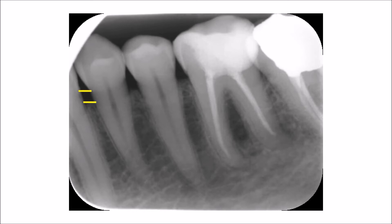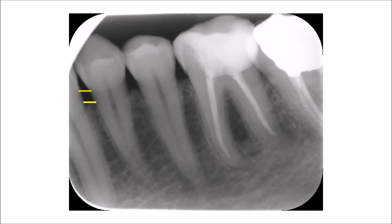The first thing you need to do — let's talk about the two premolars — is to connect between the two cemento-enamel junctions of the two adjacent teeth. By doing this, you are going to create a line of reference that you will use as a guide.